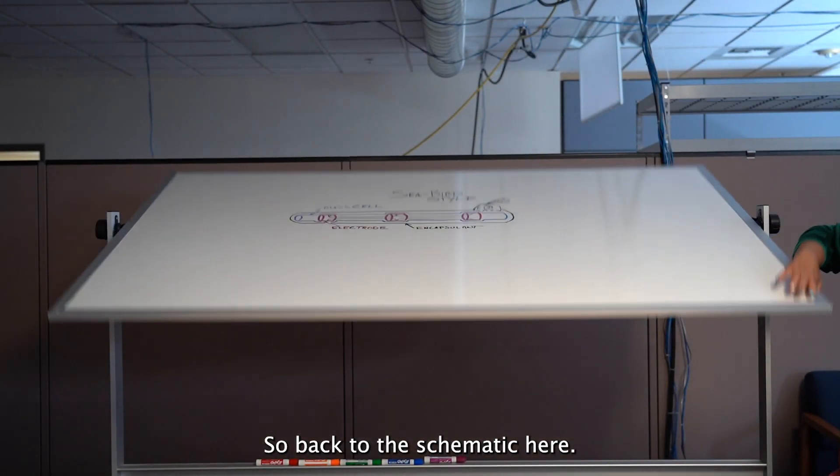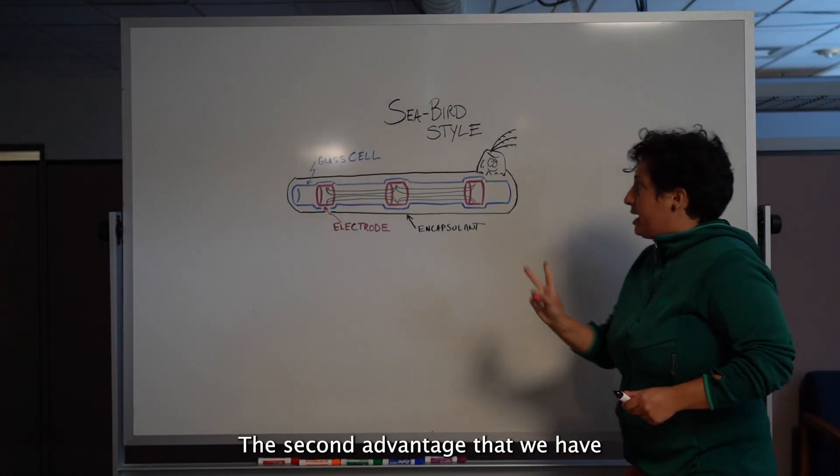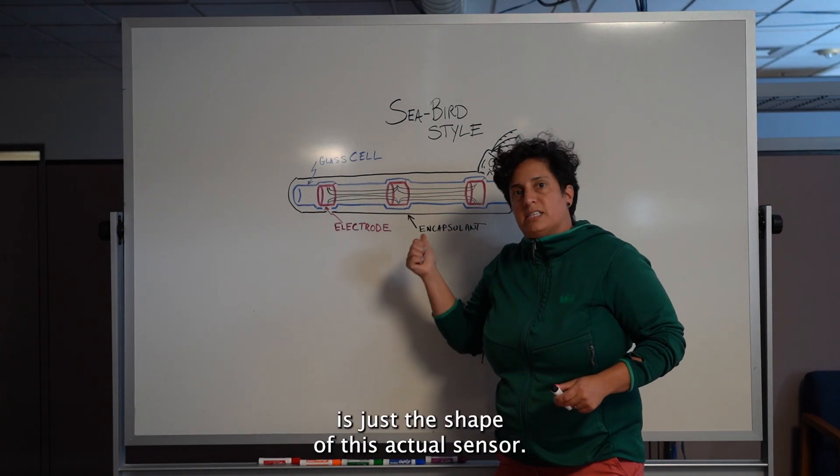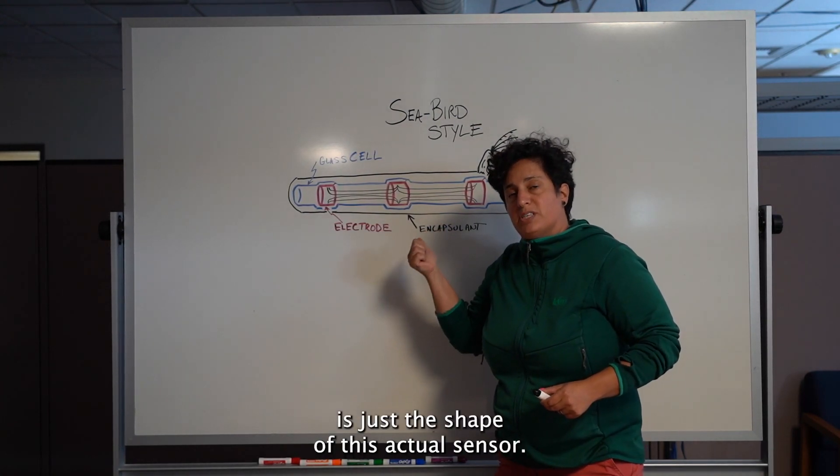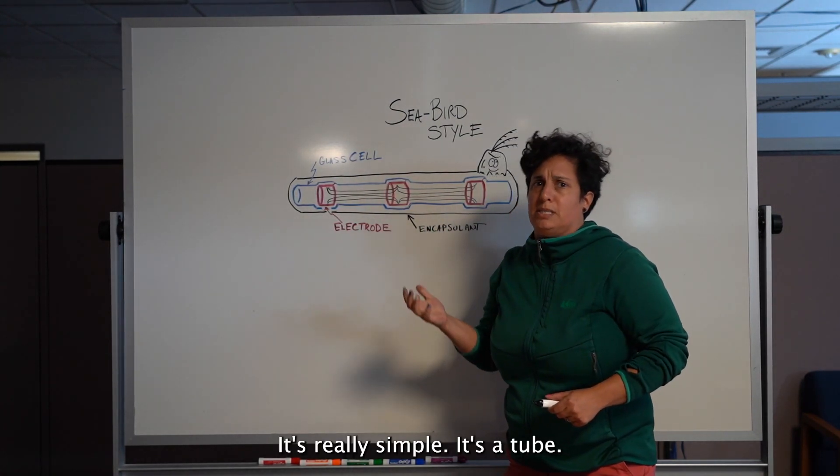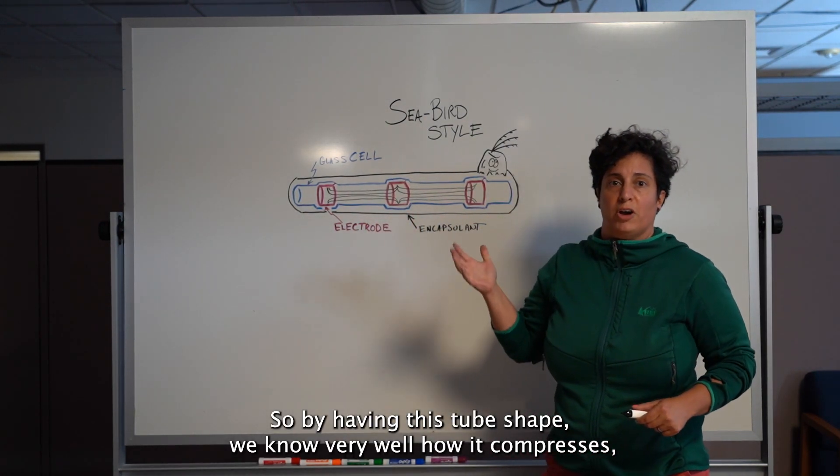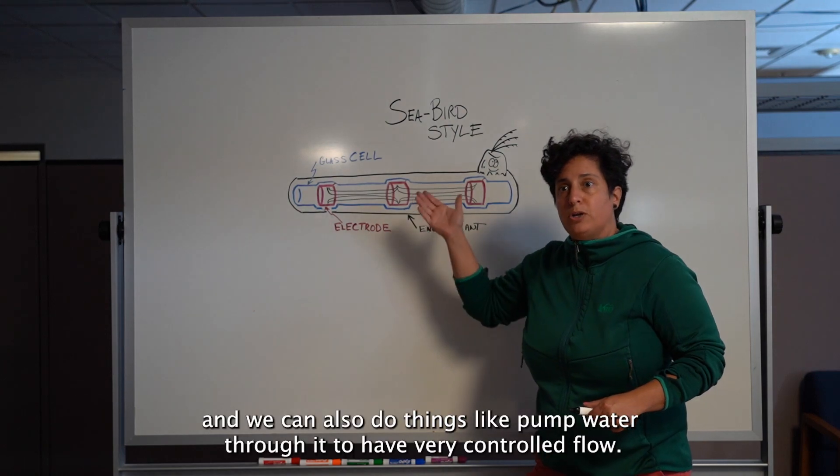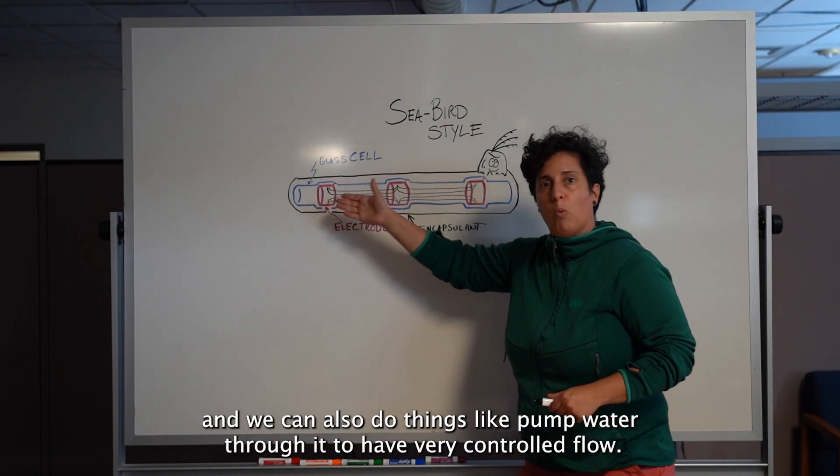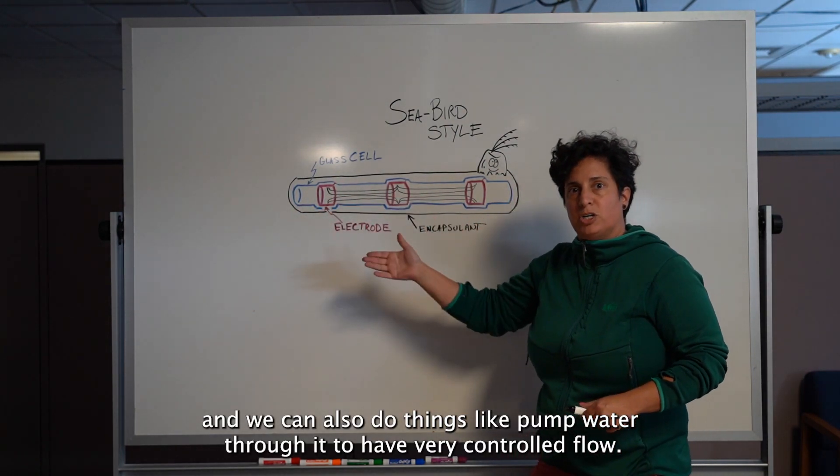So back to the schematic here. The second advantage that we have is just the shape of this actual sensor. It's really simple. It's a tube. So by having this tube shape, we know very well how it compresses. And we can also do things like pump water through it to have very controlled flow.